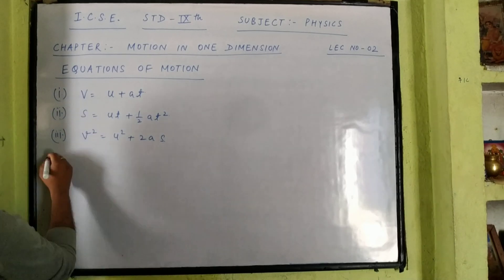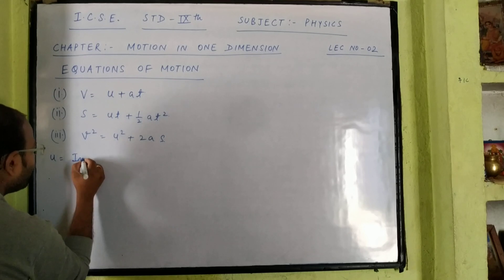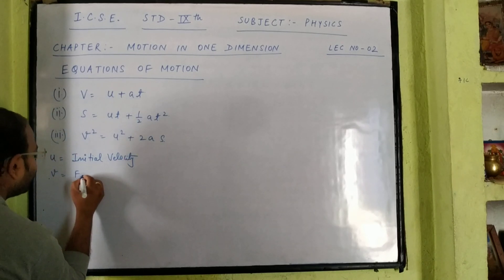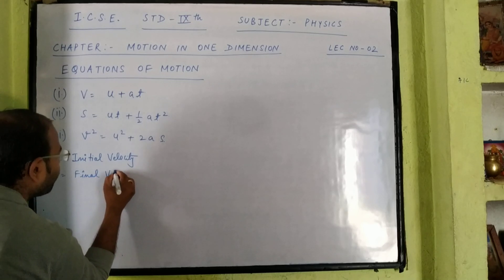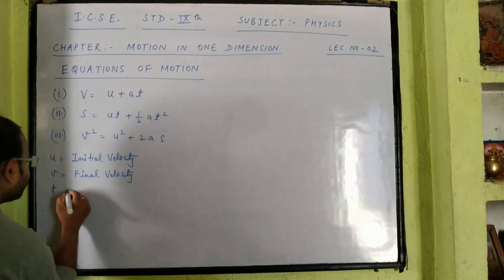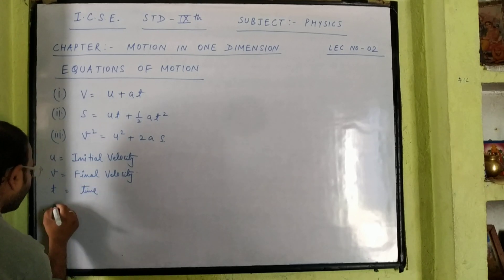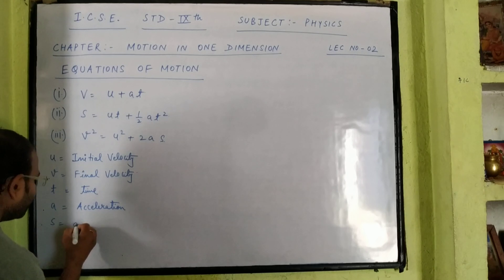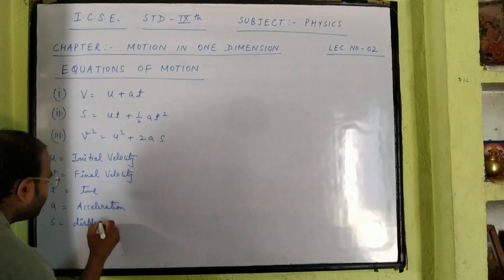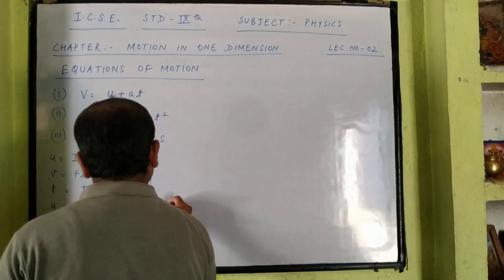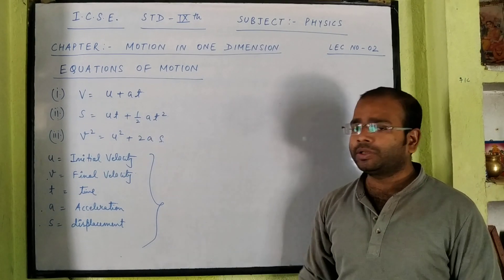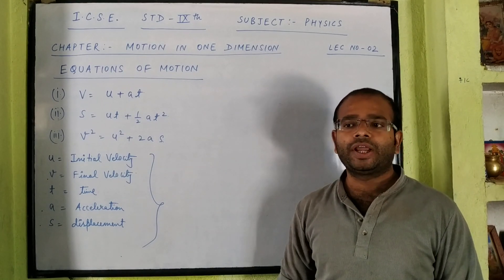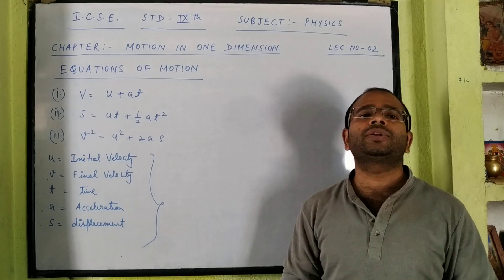Let us describe the variables in these equations one by one. U is called initial velocity, V is called final velocity, T is called time, A is called acceleration, and S is called displacement. All three equations contain these variables, and they are very important in order to find the unknown parameters of a body in motion.